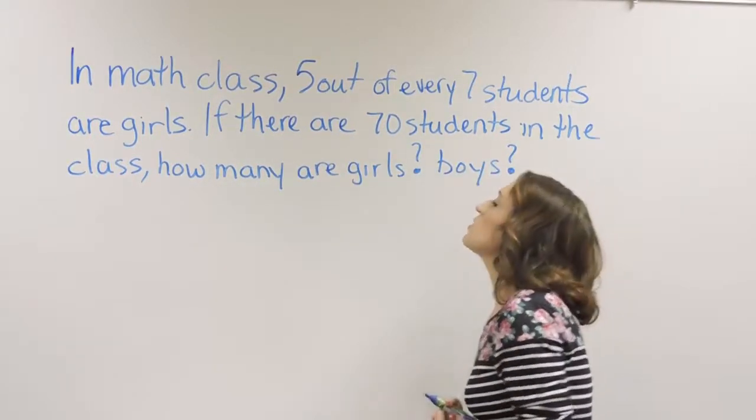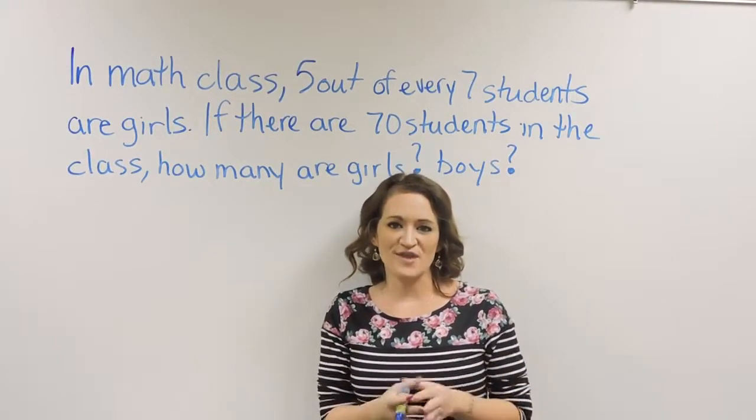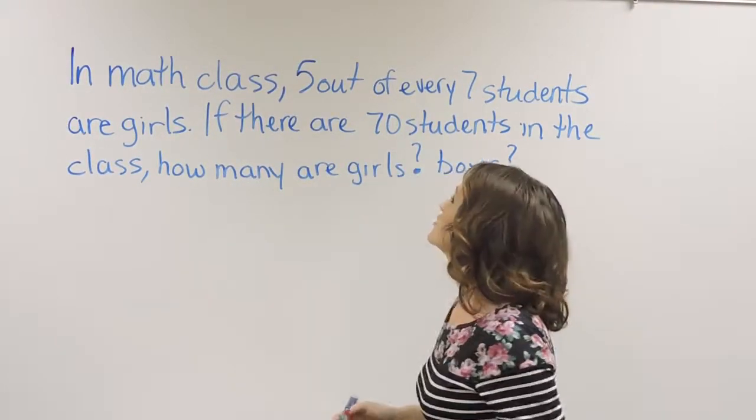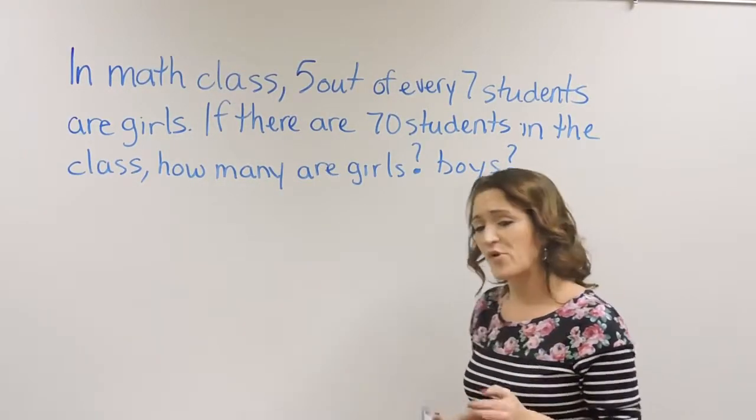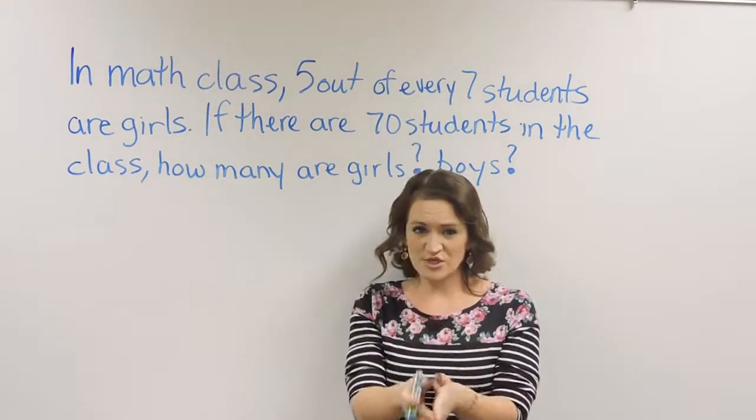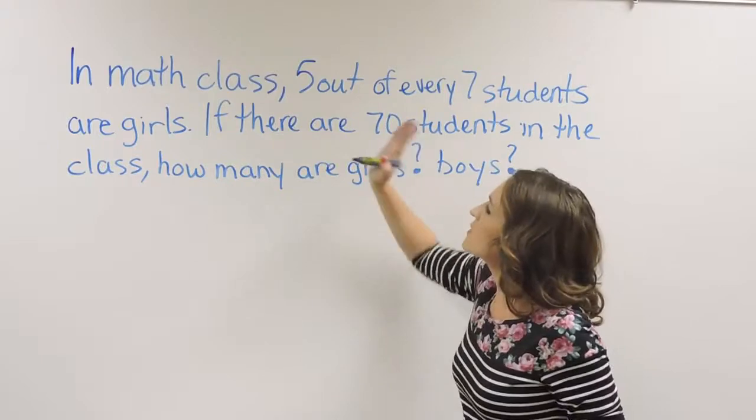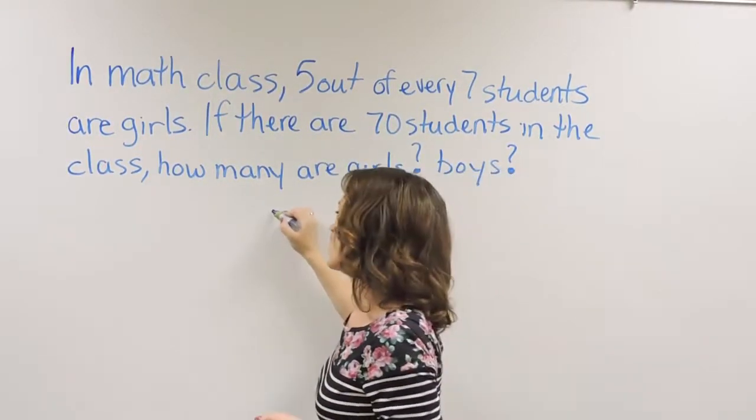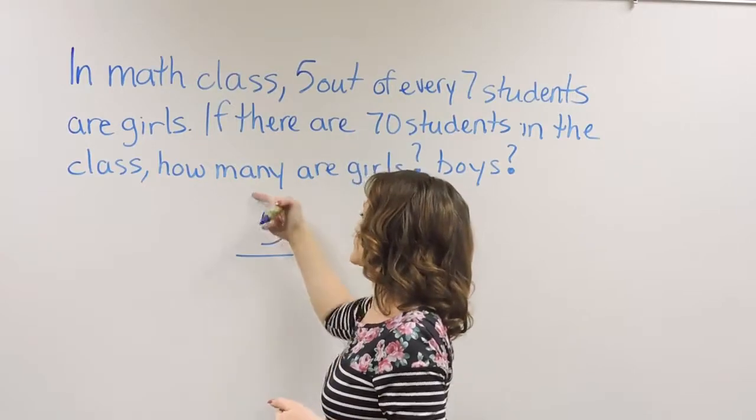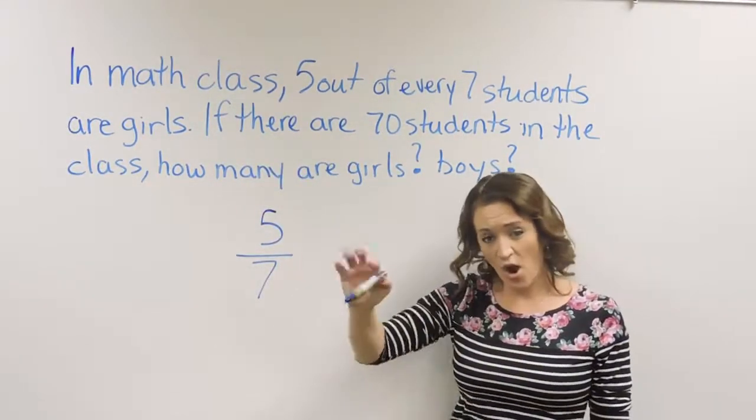We're going to focus on writing a proportion to solve this. When setting up a proportion, always start with the ratio that you know, the given information. We're told that 5 out of 7 students are girls. So what we're going to do is write 5 over 7 are girls.